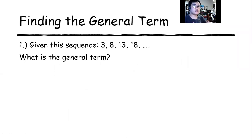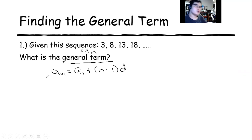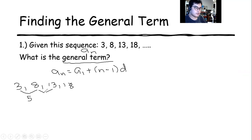Now we're going to find the general term for the given sequences. So what we're going to find is the general term, also known as a sub n. We're going to copy the sequences first and find the difference. The difference is 5, because 8 minus 3 is 5, 13 minus 8 is 5, and 18 minus 13 is 5.